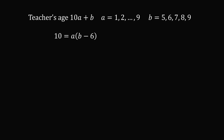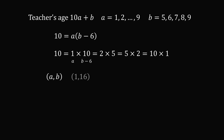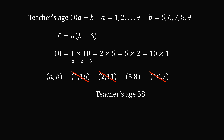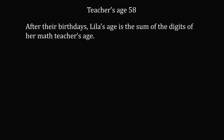Now we could try out each value of b, but instead we'll factor 10. 10 can be factored as 1×10, 2×5, 5×2, or 10×1, taking the first number to be a and the second to be (b minus 6). Going through each case and solving for the pairs a and b, we need both to be single digits, which eliminates three of the cases. We're left with a equals 5 and b equals 8, meaning the teacher's age is 58. Leela's age is the sum of the digits: 5 plus 8 equals 13. That's the answer.